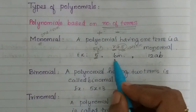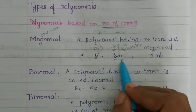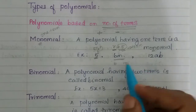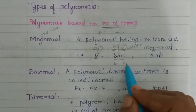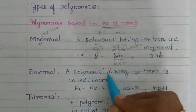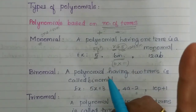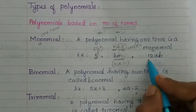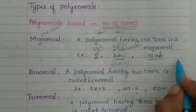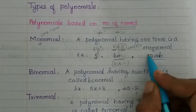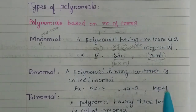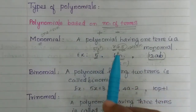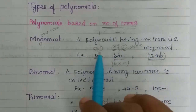Also, 'lab' — since there is no plus or minus symbol, lab is one term. So this is a monomial. One constant is one term. A polynomial having one term — a constant is one term — so that is also a monomial.